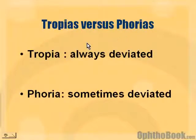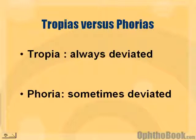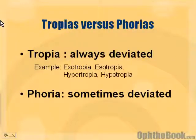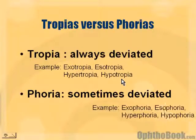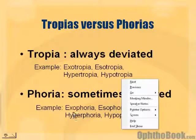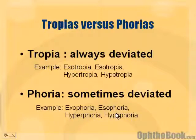Now, we just talked about eso and exotropias. What about forias? Tropia is when the eyes are always deviated. So if you have an exotropia, the eyes are deviated outward — they're wall-eyed — and they're always deviated. Foria, on the other hand, means they're only deviated sometimes. Examples of tropias include exotropia and esotropia, and of course hyper and hypo. For phorias, we call them exophoria, esophoria, and so on.